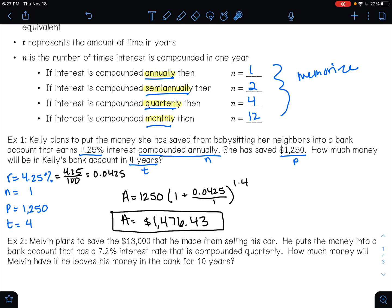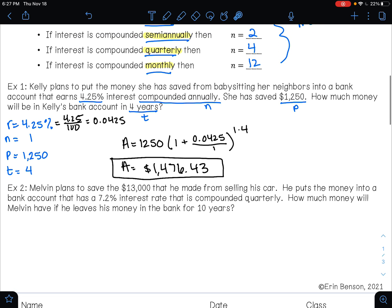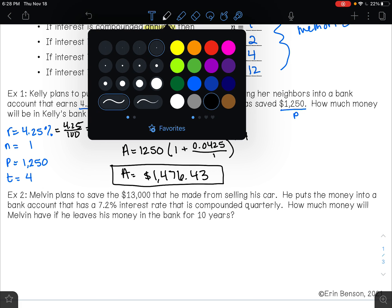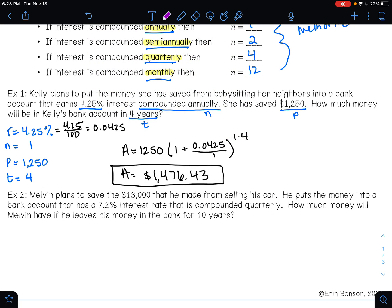For the next example, it says, Melvin plans to save the $13,000 that he made from selling his car. Must be a really nice car. He put the money into a bank account that has 7.2% interest rate that is compounded quarterly. How much money will Melvin have if he leaves his money in the bank for 10 years? So let's see. He's putting $13,000 into the bank. That's his principal amount.